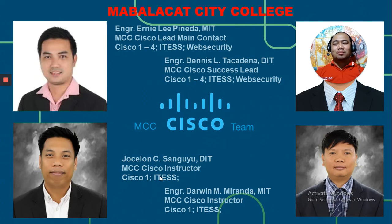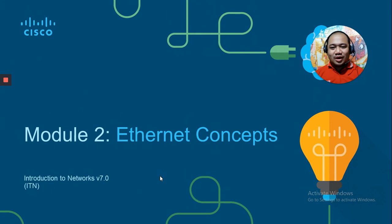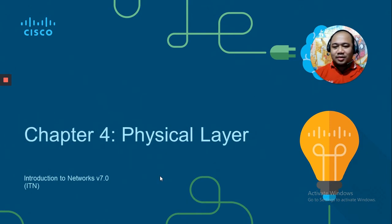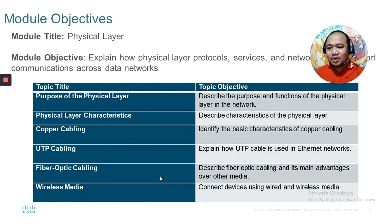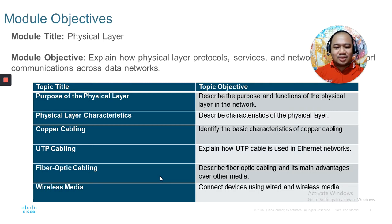Welcome to Network 1 class, Introduction to Network, Module 2, entitled Ethernet Concepts. I'm Dennis Takadena, your instructor in this video. Our module covers Chapter 4, the Physical Layer. Module objectives include: describing the purpose and function of the physical layer, its characteristics, basic characteristics of copper cabling, how UTP cable is used in Ethernet networks, fiber optic cabling advantages, and connecting devices using wired and wireless media.